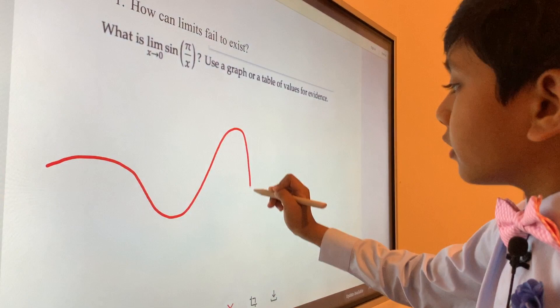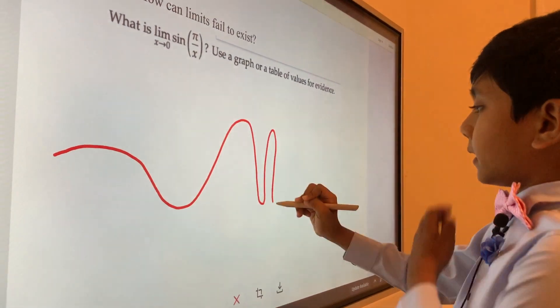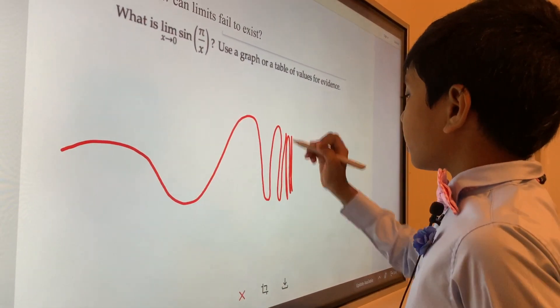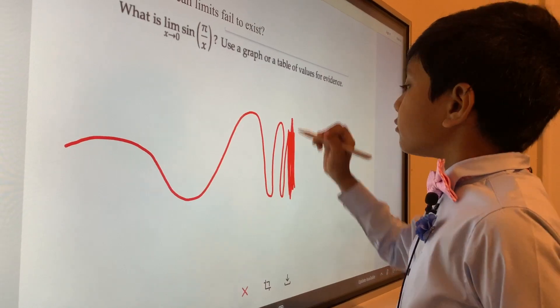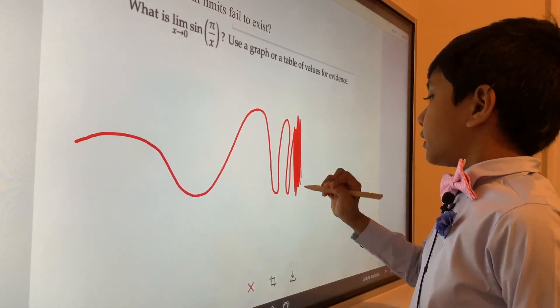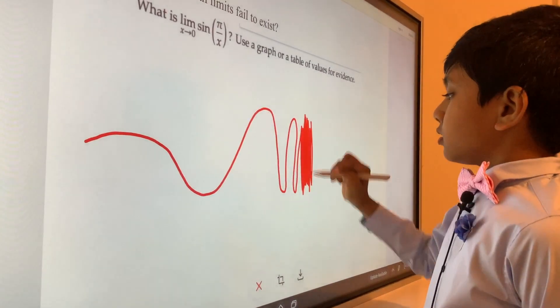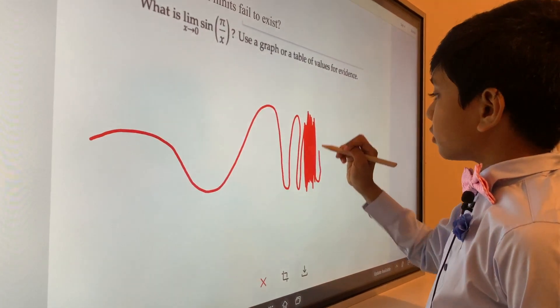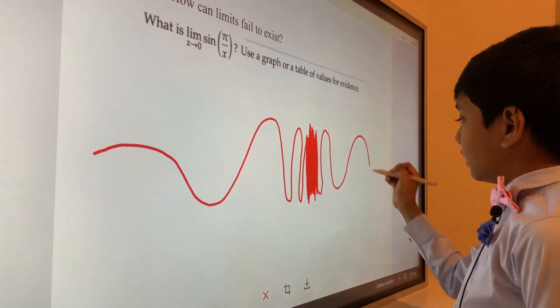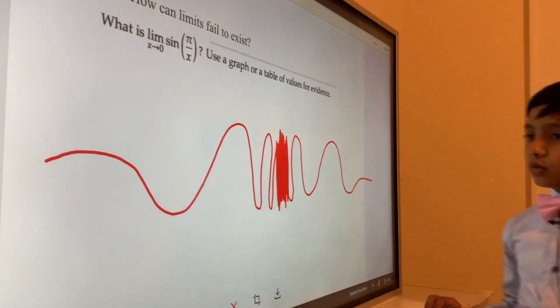So the graph is going to look something like this. It looks like a normal sine wave, but then it suddenly increases frequency and then it's just a big red block right in the middle.